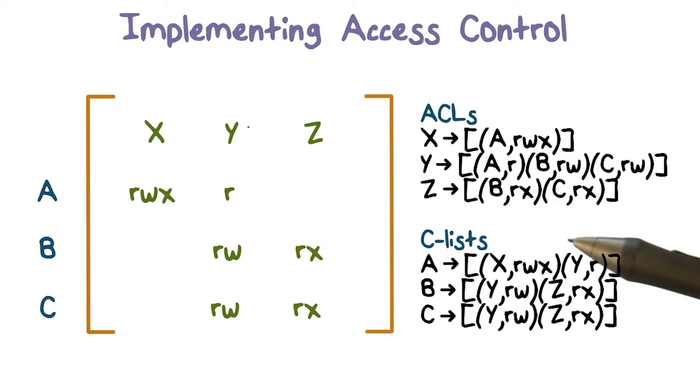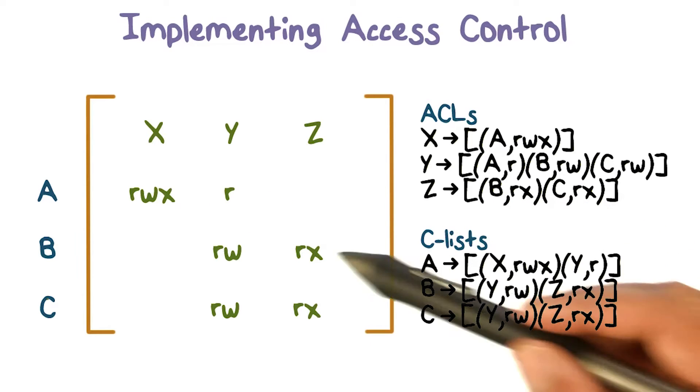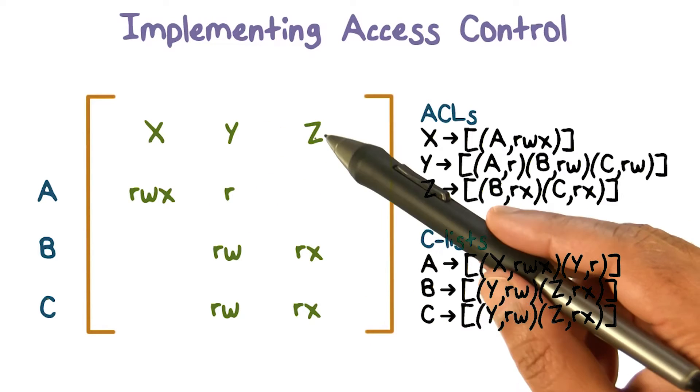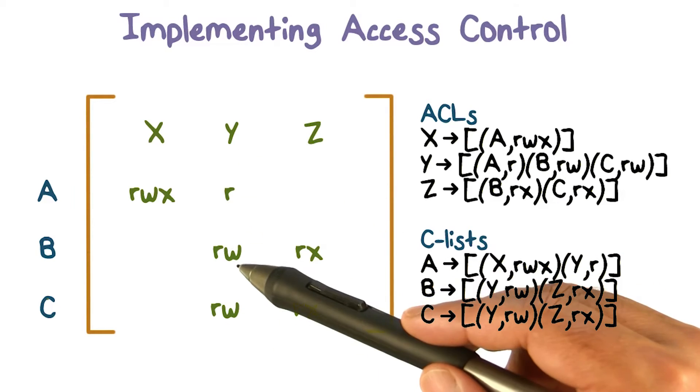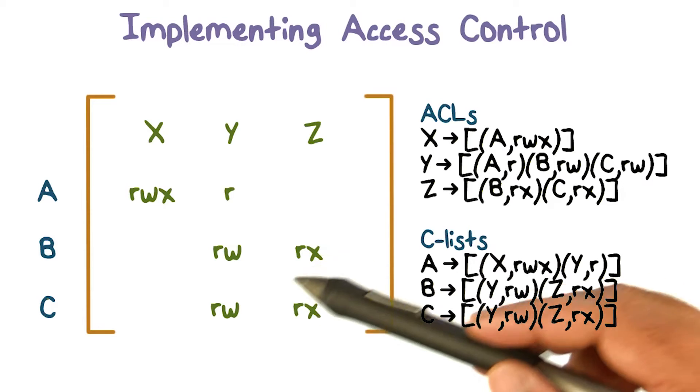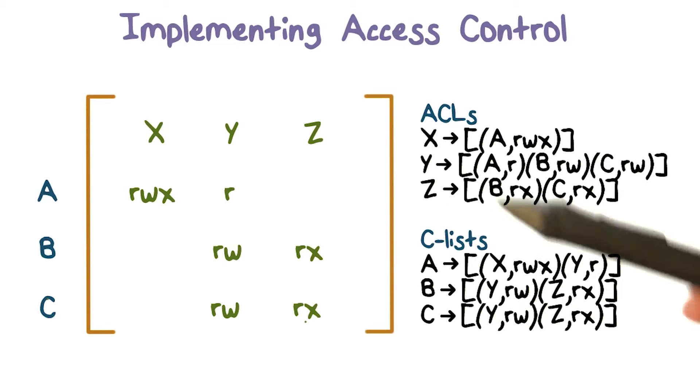If you look at the matrix, A can read, write, and execute object x, can only read object y, and has no access to object z. B can read and write y and can read and execute z. This matrix tells you who can do what, given the three users and three resources we have.